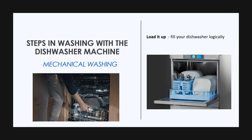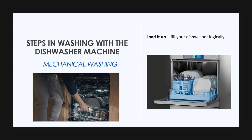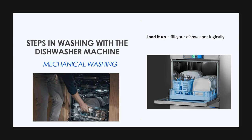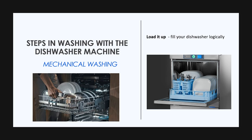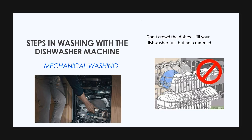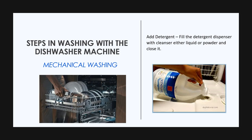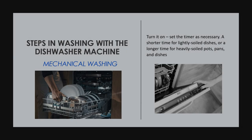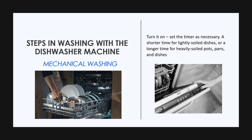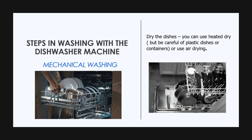Now let us proceed to the second type of warewashing: mechanical warewashing. Mechanical warewashing requires a dishwashing machine capable of washing, rinsing, and drying dishes, flatware, and glassware. Steps for mechanical washing: first, load it up — fill your dishwasher logically, don't crowd the dishes, fill it full but not crammed. Add detergent — fill the detergent dispenser with liquid or powder cleanser and close it. Turn it on and set the timer as necessary: a shorter time for lightly soiled dishes or a longer time for heavily soiled pots, pans, and dishes. For drying, you can use heated dry but be careful with plastic dishes, or use air drying.